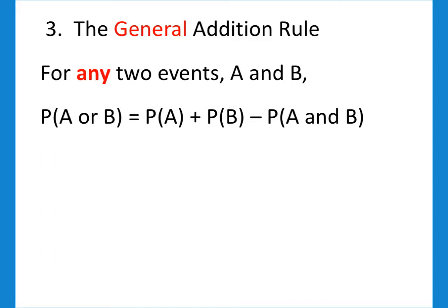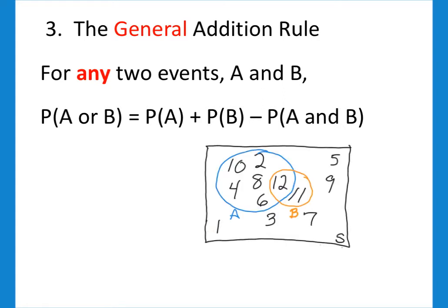So let's take a look at our Venn diagram example again. Here we're letting the event A be defined as an even number, and we'll let B be defined as greater than 10 within this sample space that goes from 1 to 12 once again.